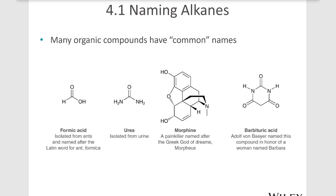Here we have some examples of common names for organic molecules. On the left we have formic acid, which was isolated from fire ants — that comes from the Latin word for ant, which is formica. Next we have urea, which was isolated from urine, and then we have morphine, this very large molecule. On the right we have barbituric acid, which was named in honor of a woman known by Adolf von Bayer, who discovered barbituric acid.